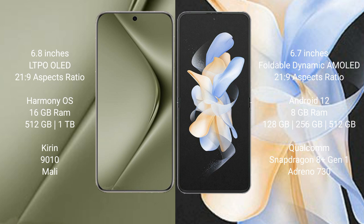The Huawei P70 Ultra runs on the HarmonyOS operating system. The Samsung Galaxy Z Flip 4 runs on Android 12. The Huawei P70 Ultra comes with 16GB RAM and 512GB or 1TB internal storage, with a Kirin 9010 processor and a Mali GPU. The Samsung Galaxy Z Flip 4 comes with 8GB RAM and 128GB, 256GB, or 512GB internal storage, with a Snapdragon 8 Gen 1 processor and Adreno 730 GPU.